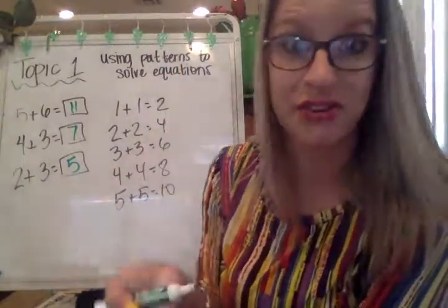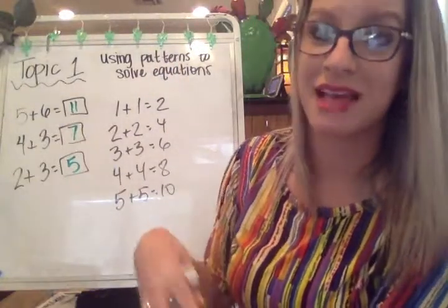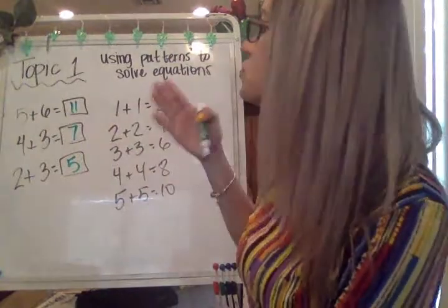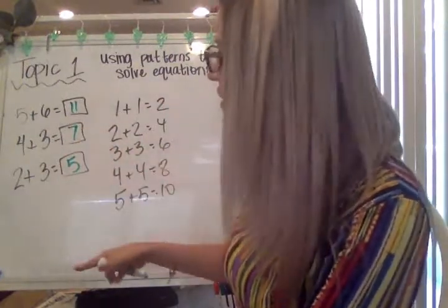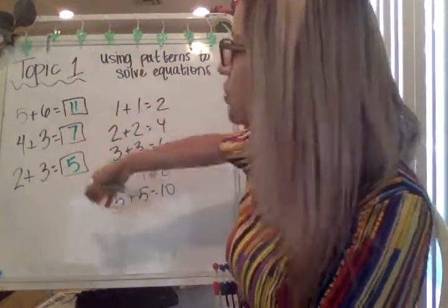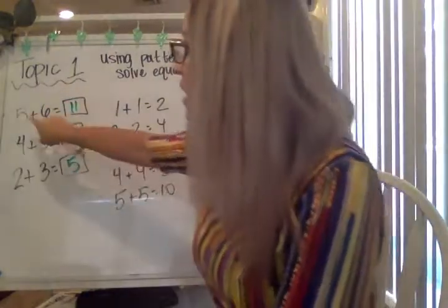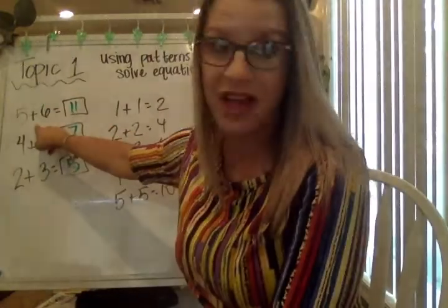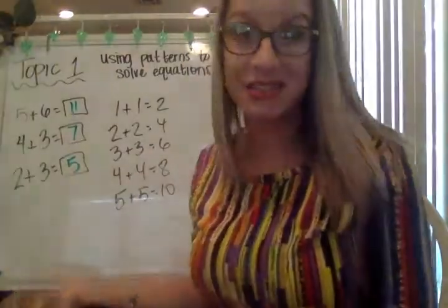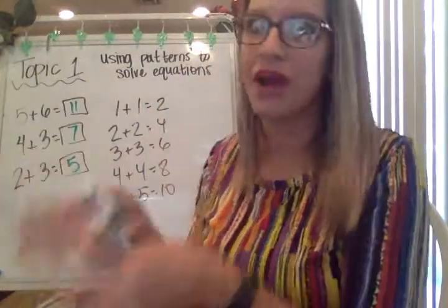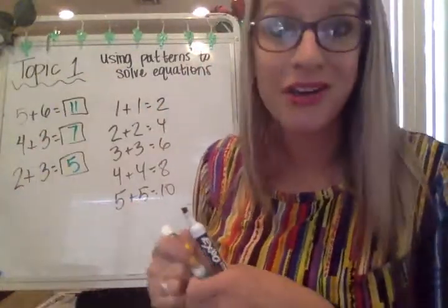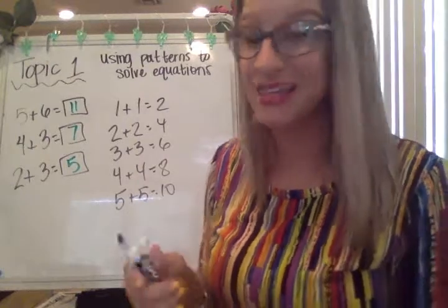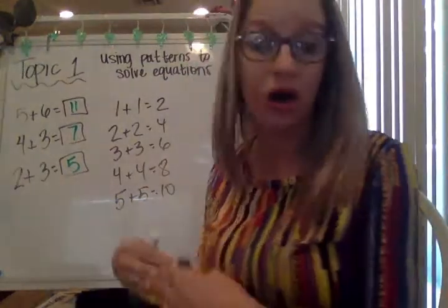Remember all of these for topic one are just with sums less than 20. So we're not going to get too far into greater numbers. But I want you to notice the pattern of that. You know that five plus five is 10 and you know six plus six is 12 and 11 falls right in the middle of that. So look at your numbers and make sure that your sums are making sense to the things that you already know.